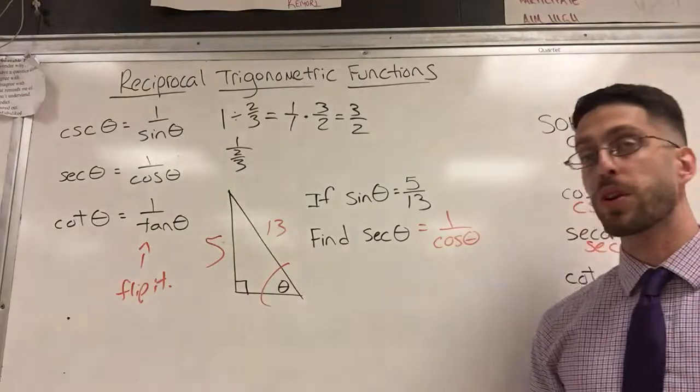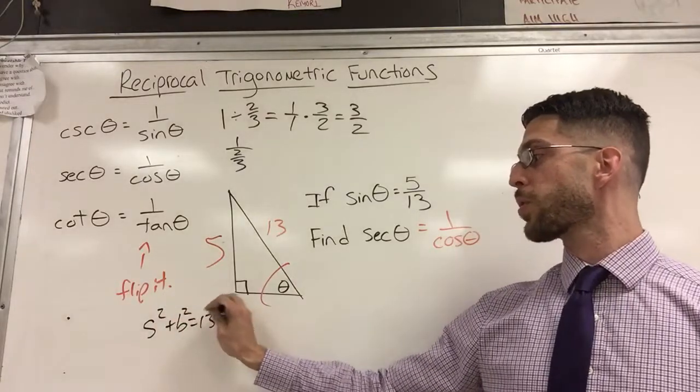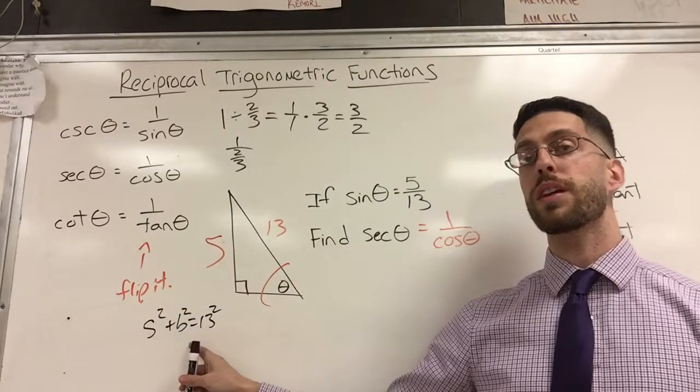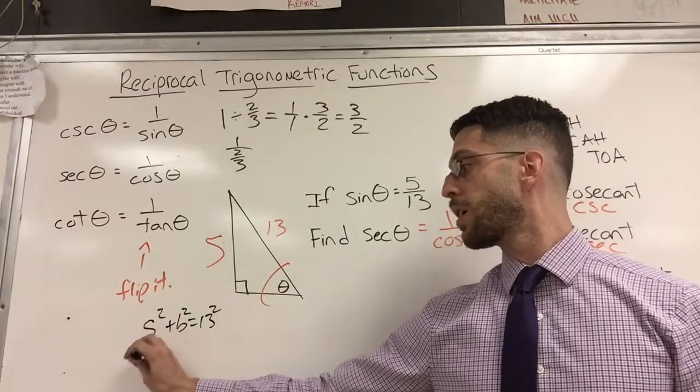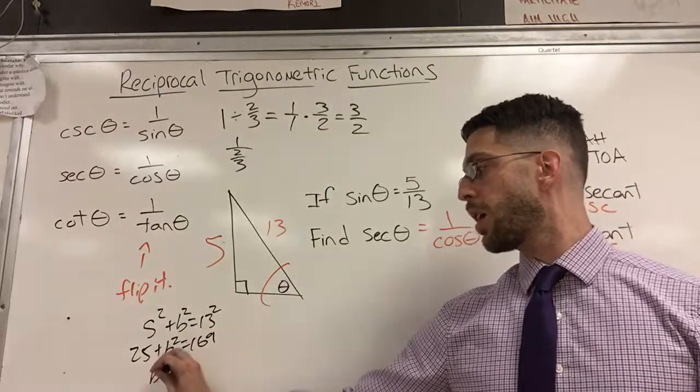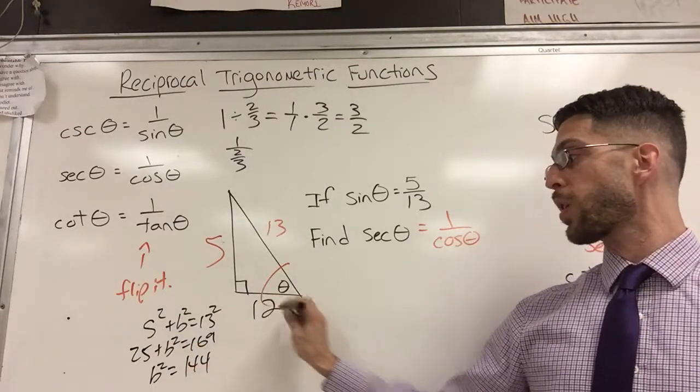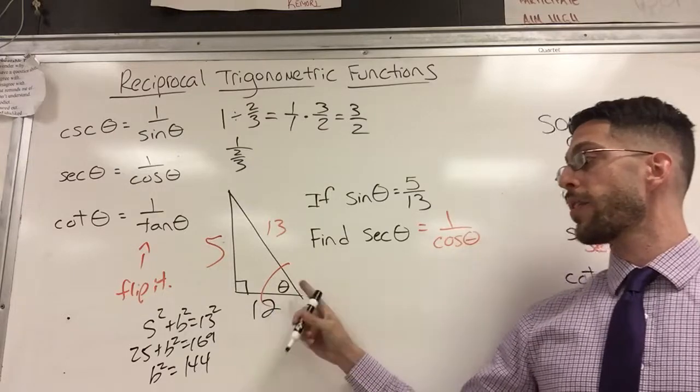A squared plus B squared equals C squared. So that's five squared plus B squared equals 13 squared. And if you work this out, you'll find out that B is, if I subtract 25 from both sides, that gives me 144. So B alone is 12. So I would put a 12 there.